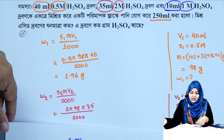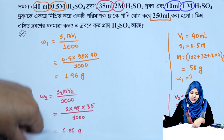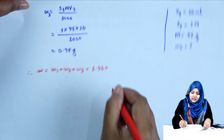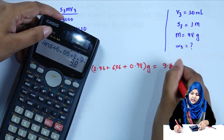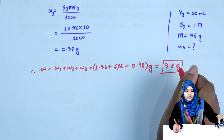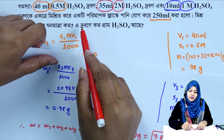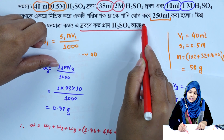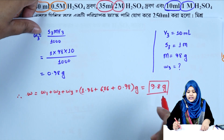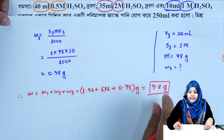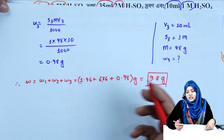w = w1 + w2 + w3 = 1.96 + 6.86 + 0.98. This gives us the answer to the second part of the problem — how many grams of sulfuric acid are in the drops. The total sulfuric acid in the drops is 9.8 grams.